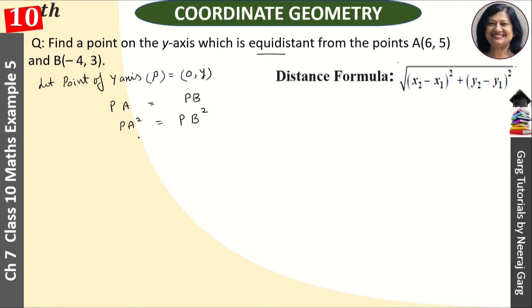Because we have already squared, PA² means P is (0, y), so (0-6)² + (y-5)² = (0+4)² + (y-3)².